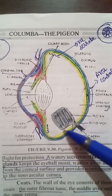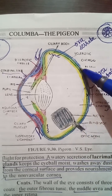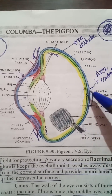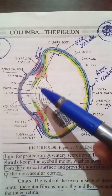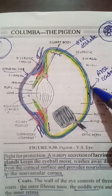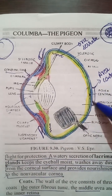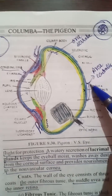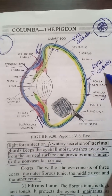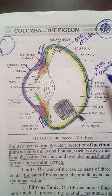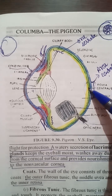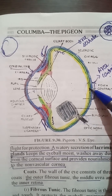Throughout the retina the number of cones is sufficient, but because the yellow spot lies completely opposite to the lens, it is the best place for image formation. It is termed as area centralis, yellow spot, or macula lutea. It has a depression in its center which is termed as the fovea centralis.